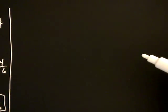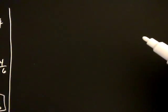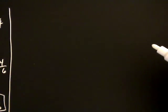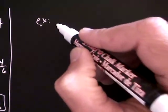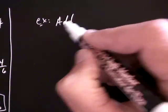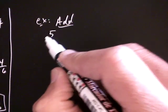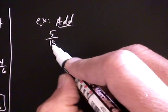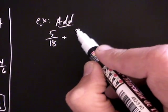Now that we know why you add fractions the way you do, let's go ahead and practice adding together two fractions with larger denominators. For example, let's say we wanted to add five over eighteen, and to that we want to add three over twenty.